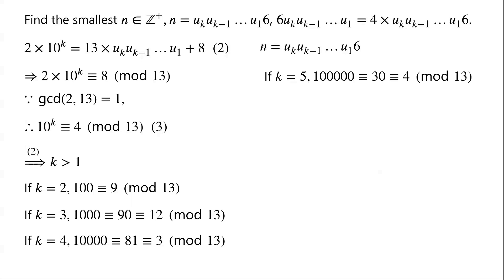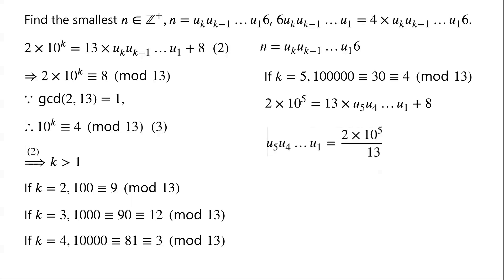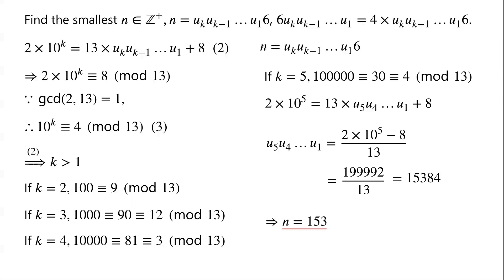Substituting k=5 into equation 2, we have: 2 × 10^5 = 13 × (u_5, u_4, ..., u_1) + 8. So u_5, u_4, ..., u_1 = (2 × 10^5 − 8) / 13 = 199,992 / 13 = 15,384. Therefore n = 153,846. This is the smallest natural number that satisfies the given conditions.